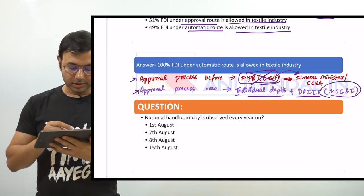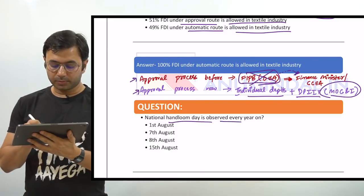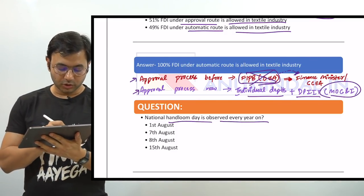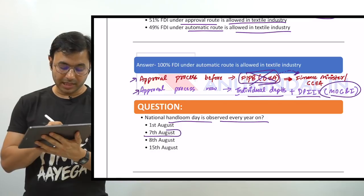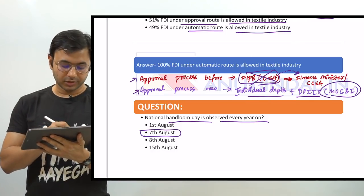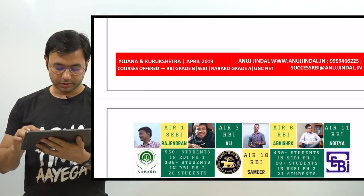Another factual question: National Handloom Day is observed every year on which date? The answer is B — 7th August.